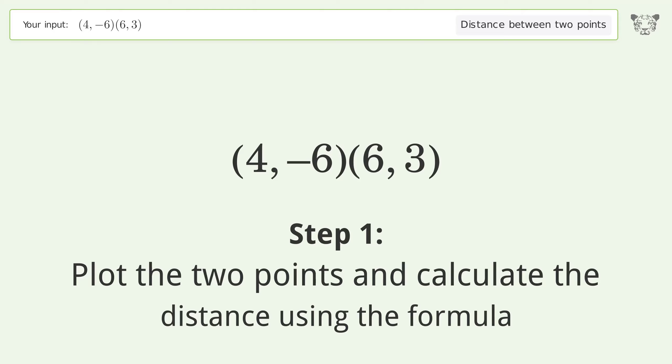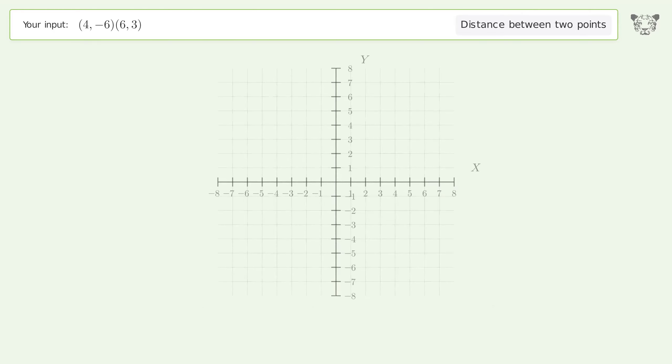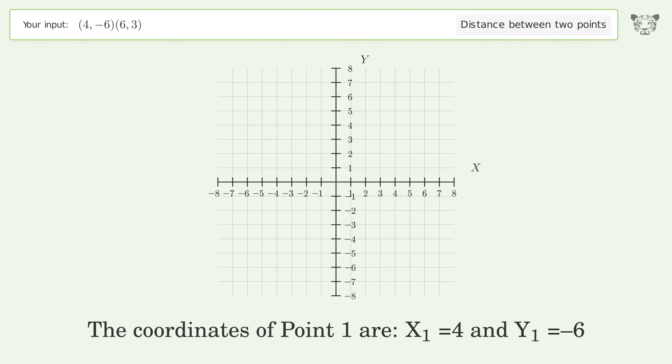The coordinates of point 1 are x1 equals 4 and y1 equals negative 6. The coordinates of point 2 are x2 equals 6 and y2 equals 3.